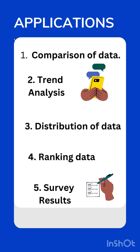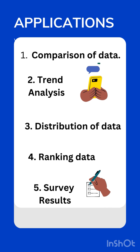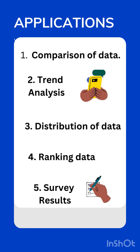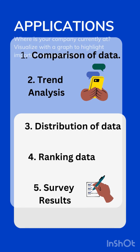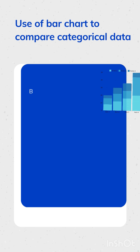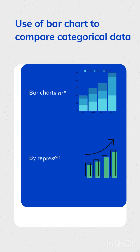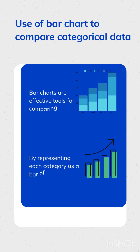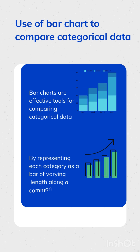Bar charts are used for comparing data across different categories, showing trends over time when used with a time series, displaying the distribution of data, and for ranking items from highest to lowest. They are effective for comparing categorical data by representing each category as a bar of varying length along a common axis.